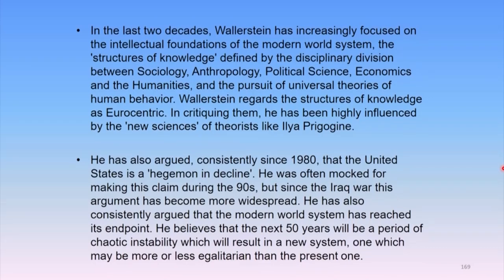Wallerstein argued that the US is in hegemonic decline. He mentioned this in 1980 when the second volume of the modern world system was published. He was often mocked for making this claim during the 1990s, especially in the aftermath of the debacle of socialism in the erstwhile USSR. But since the Iraq war, Wallerstein's argument has become more widespread and acceptable. He has also consistently argued that the modern world system has reached its end point, and that the next 50 years or so will be a period of chaotic instability resulting in a new system.